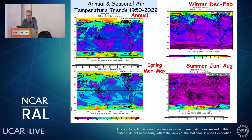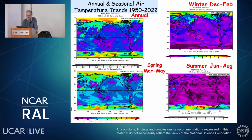Based on NCEP-NCAR reanalysis data from 1950 to 2022, the warming trend in the high Arctic could be over 3 degrees Celsius, while the global average is about 0.5 to 1 degree Celsius. In winter seasons, the warming trend is much higher in the Arctic, while mid-latitude and equatorial areas show more modest warming. In summer, warming is much higher in the southern latitudes. So the pattern depends on both latitude and season.